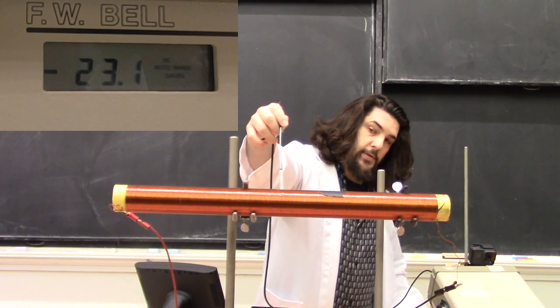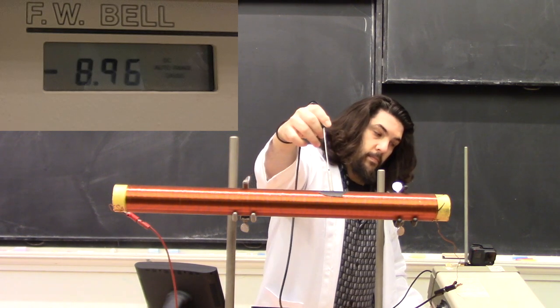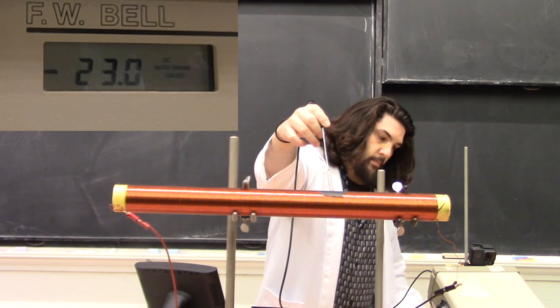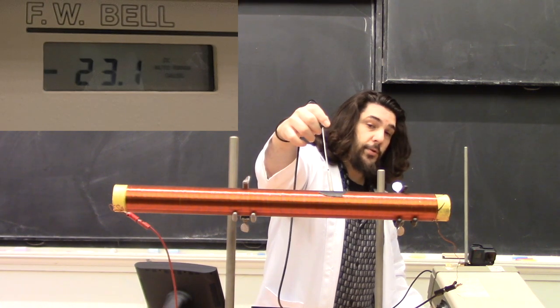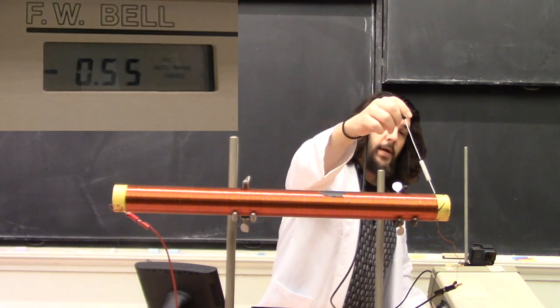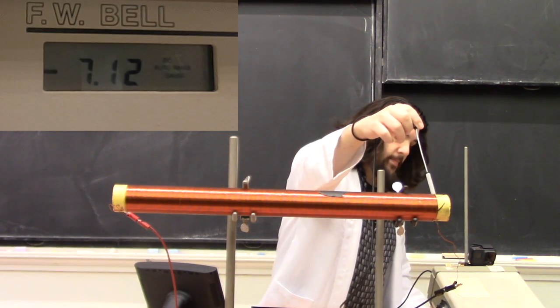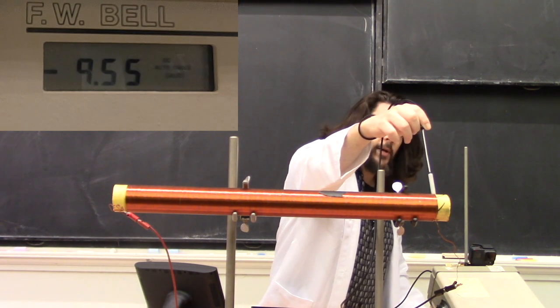About 23 gauss in the middle. Still 23 about two-thirds of the way through. But at the very edge of the solenoid, we're looking at about 9.5.